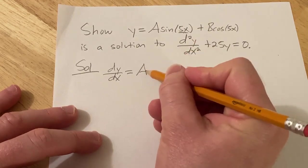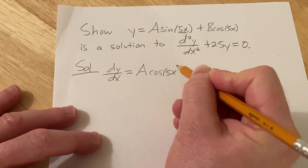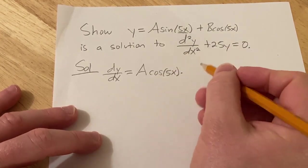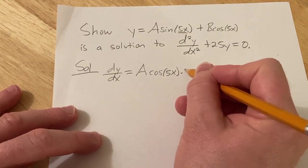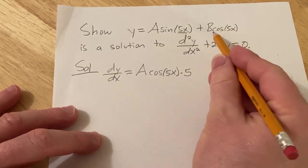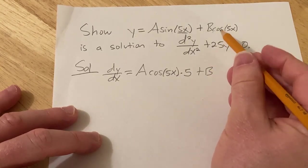So it'll be A cosine 5x, that's the derivative of the outside evaluated at the inside, times the derivative of the inside function. The derivative of 5x is simply 5. And then here it's plus B.